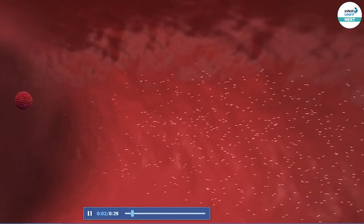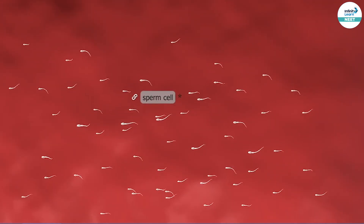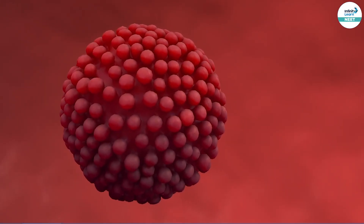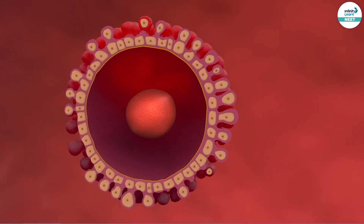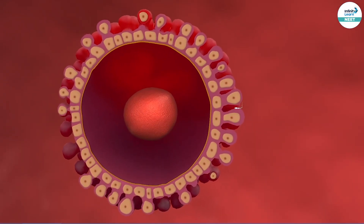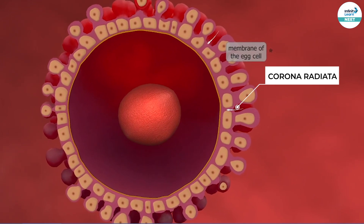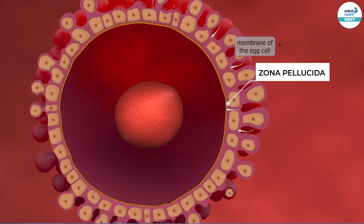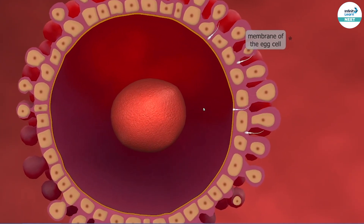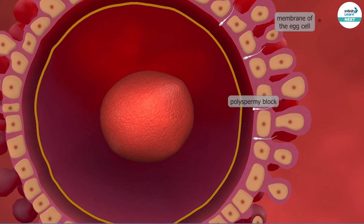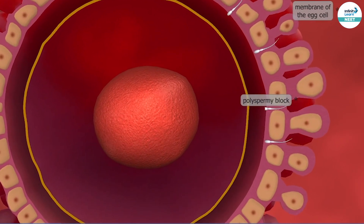In this diagrammatic representation, you can clearly see that millions of sperms enter the female tract. Then one sperm — the fastest one — tries to enter the ovum by breaking the outermost layer, which is the corona radiata, and then the zona pellucida. As soon as the sperm enters the cell, polyspermy is blocked, meaning the other millions of sperm cells cannot enter the ovum.